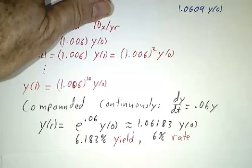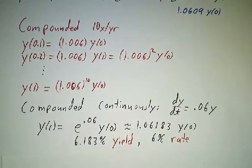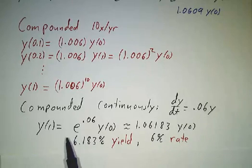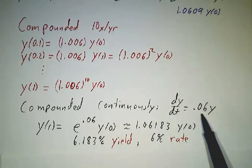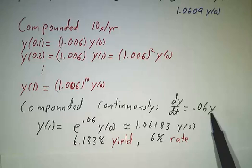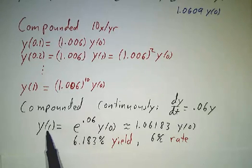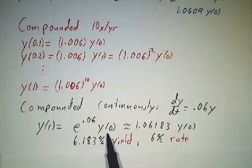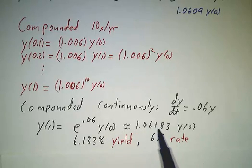And if you compound continuously, that means solve the differential equation. And the solution to the differential equation is e to the 0.06t times y of zero. So what you actually have at y of one, the exact solution is e to the 0.06 times y of zero. And that comes out to about 1.06183.